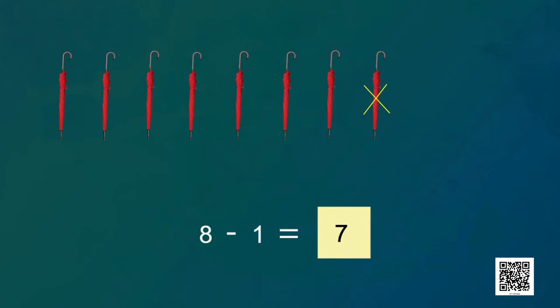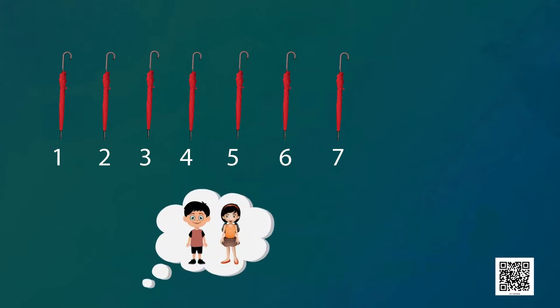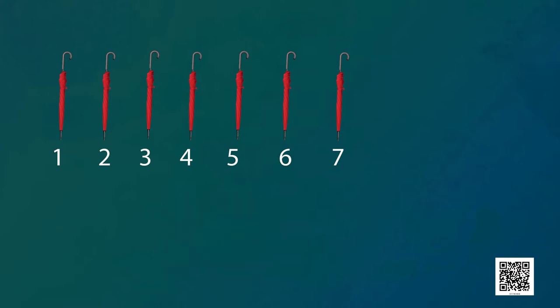To subtract means to take some numbers away, and to write this we use the symbol of minus — it looks like a small dash. Now I have seven umbrellas. Out of these seven, I want to give away two umbrellas to Anuj and his little sister Shiny. So I will have to subtract two more umbrellas from these seven. We write it as seven minus two.